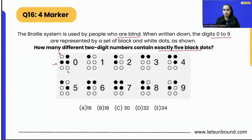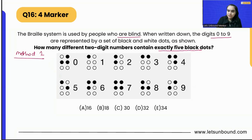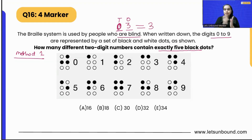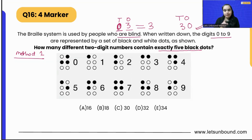How many different two-digit numbers contain exactly five black dots? There are two ways to solve this question. First, if we are going to make a two-digit number it will have a tens place and a ones place. We cannot put zero in the tens place — if we put zero in tens place and three in ones place, that equals just three. Zero before any number has no value, whereas zero in the ones place is valid and the number is considered a two-digit number.